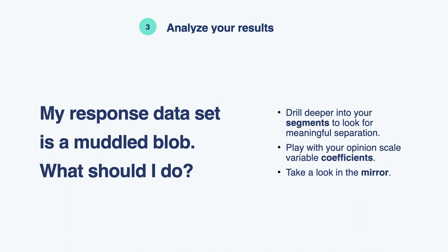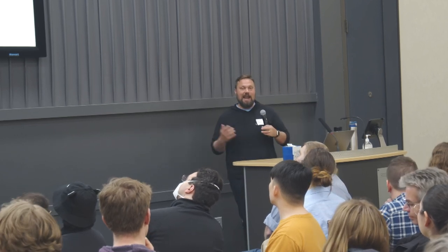One thing that can happen is your response data is all lumped together with no separation or stratification. That happens — it's frustrating. If you built segmentation into your sampling, go there first and look for meaningful differences between users of certain platforms or frequent versus infrequent users. You can also play around with those coefficients — does changing the scale help you zoom in on the data? And sometimes the results are just what they are. When that happens, look in the mirror: is it something about the method, or does our strategy need rethinking?